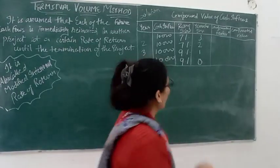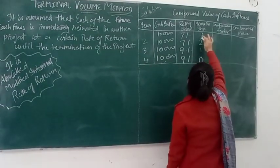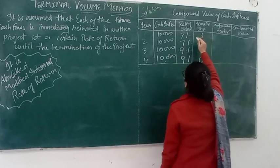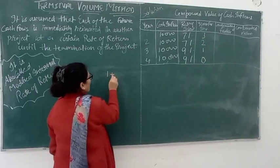Now as we proceed with the calculation, we compound each cash inflow at the respective reinvestment rate. For example, the first cash inflow is compounded at 7% for 3 years, giving us a factor of 1.07 raised to the power 3.